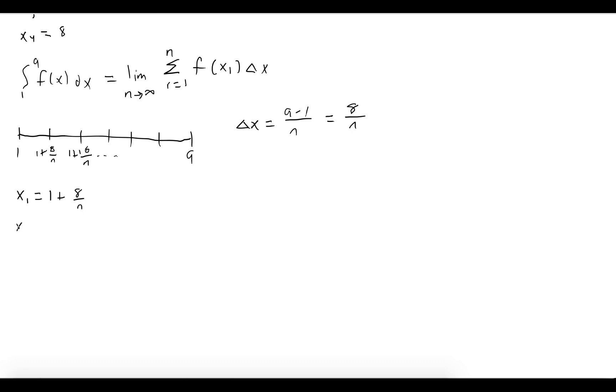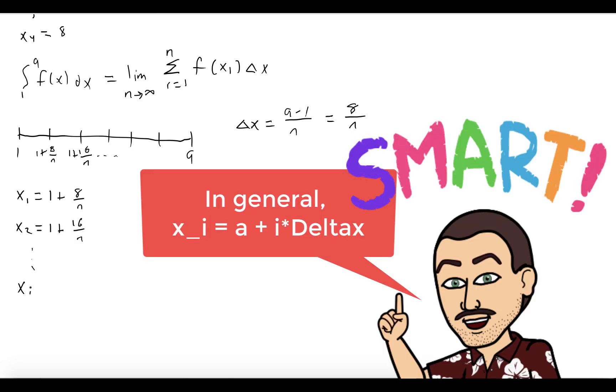Our second sample point is 1 + 16/n. And in general, our ith sample point is 1 + 8i/n.